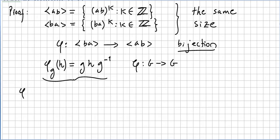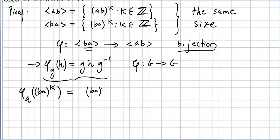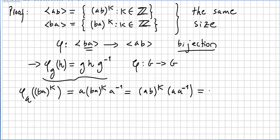Let us verify this. We apply φ with g = a. So φ of (ba)^k gives us a · (ba)^k · a⁻¹. But that is nothing else than (ab)^k · a · a⁻¹, by associativity in the group. Since a · a⁻¹ is the identity, we end up with (ab)^k. So we took (ba)^k and obtained (ab)^k, which belongs to the set ⟨ab⟩.